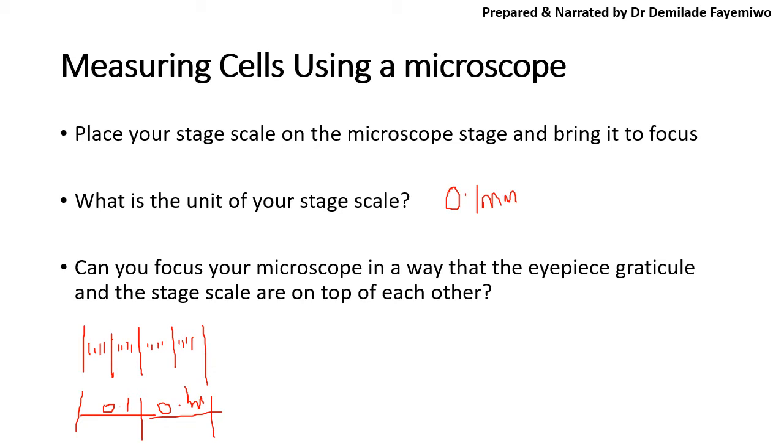What you then need to do here is to say how many units of the eyepiece graticule is equivalent to the stage scale. So here, if we count, I think this is about 10 units. This is 1, 2, 3, 4, 5, 6, 7, 8, 9, 10, 11. Well, that's not too bad then. So 11 units of our eyepiece graticule is equal to 0.1 millimeters.